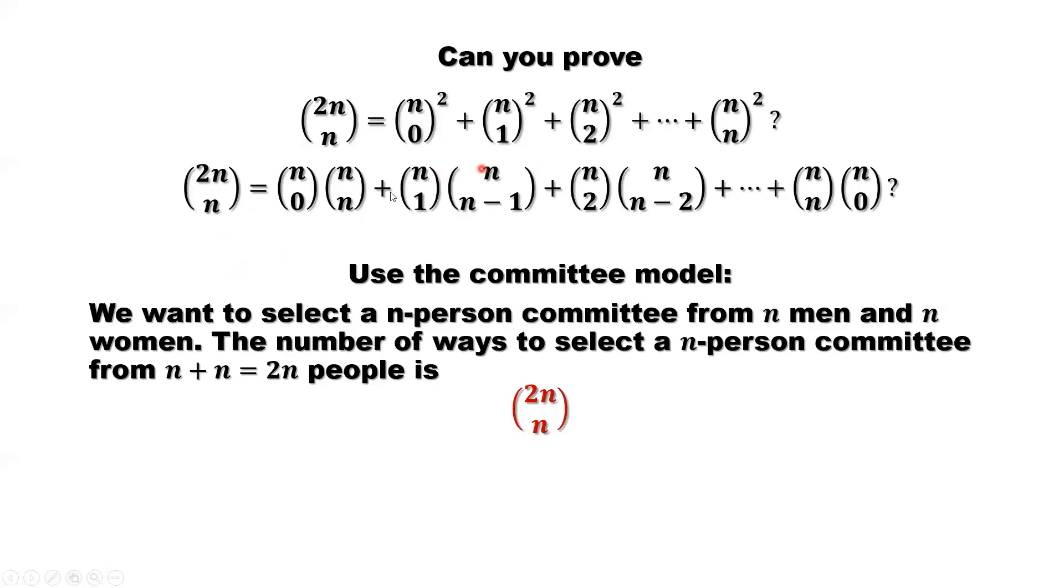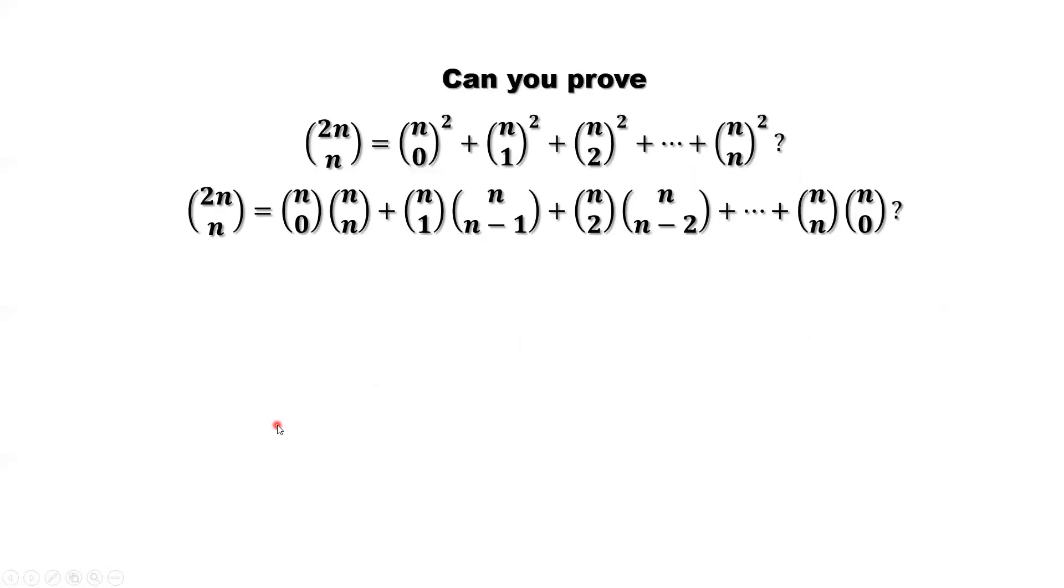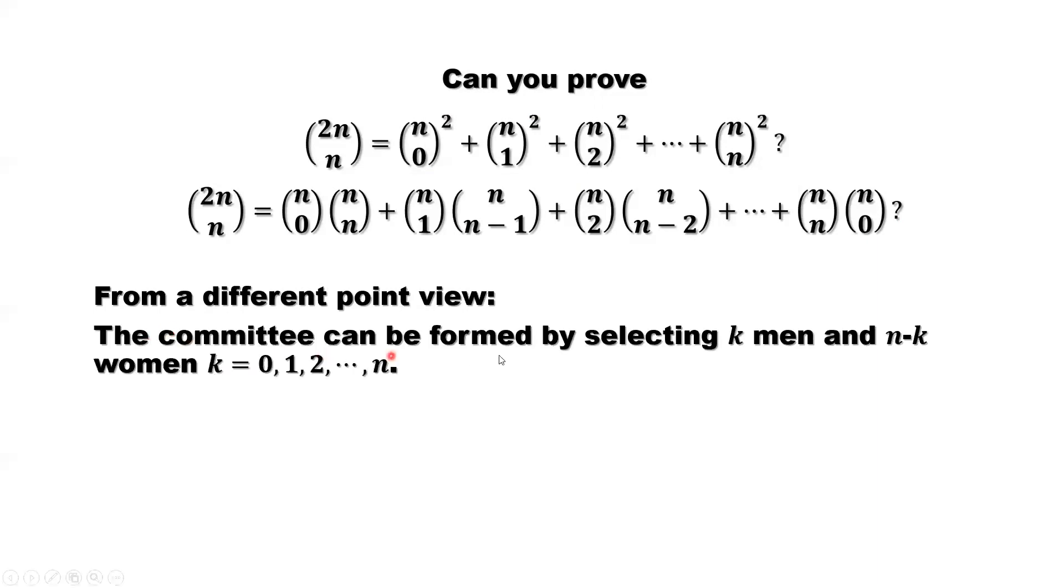Now we want to derive the right-hand side. The right-hand side we already proved, derived as this one. From a different point of view, the same n-person committee, we can form this one. The committee can be formed by selecting k men, the remaining n minus k women. So we select people differently: select k from men, n minus k from women. K can be 0, 1, 2, 3, until n.